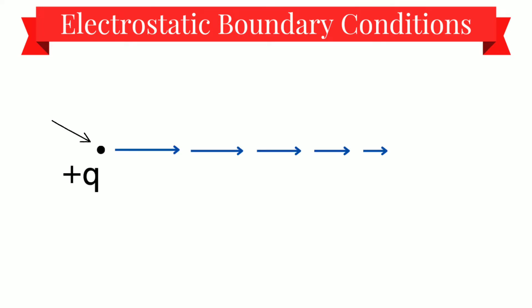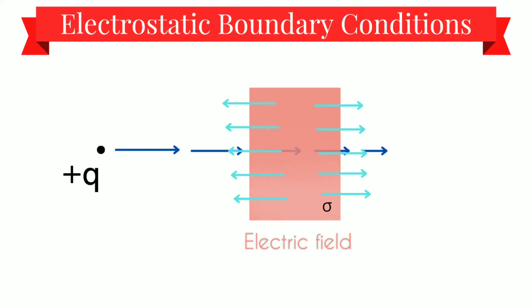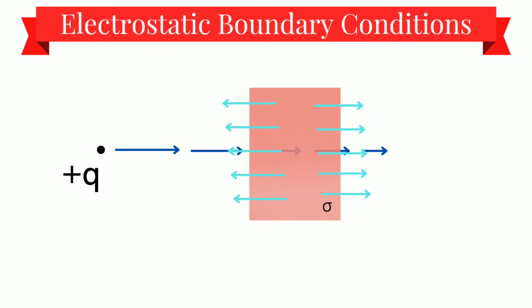Suppose this is a point charge which is producing an electric field, and now let's place a charged surface in between it, which has sigma surface charge density, and obviously this will also produce an electric field. We can see that on the left-hand side the electric fields are decreasing and on the right-hand side they are increasing. So there is a certain amount of discontinuity that we will observe here, and in this video we are going to calculate that discontinuity due to the electric field.